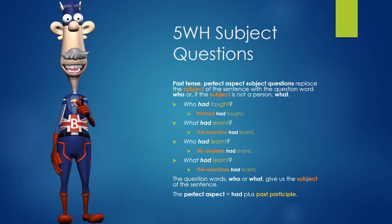5 WH Subject Questions. Past tense perfect aspect subject questions replace the subject of the sentence with the question word who, or, if the subject is not a person, what. Who had taught? Richard had taught. What had learnt? The machine had learnt. Who had learnt? The students had learnt. What had learnt? The machines had learnt. The question words who or what give us the subject of the sentence. The perfect aspect is had plus past participle.